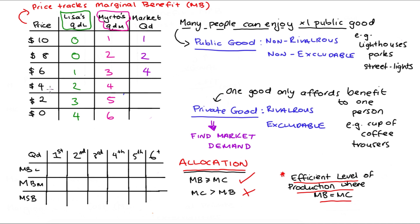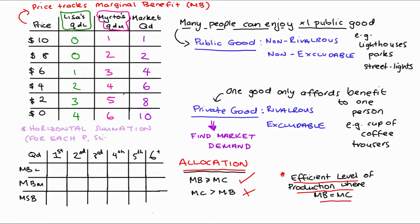At a price of $4, Lisa demands two and Murthal demands four, so six units are demanded. At a price of $2, Lisa demands three and Murthal demands five, so eight units are demanded. And if the good is free — price is zero — Lisa demands four and Murthal demands six, so ten units are demanded in total. That's how we find market demand when we have a private good, and our market demand tells us the marginal benefit for each unit consumed in the market.